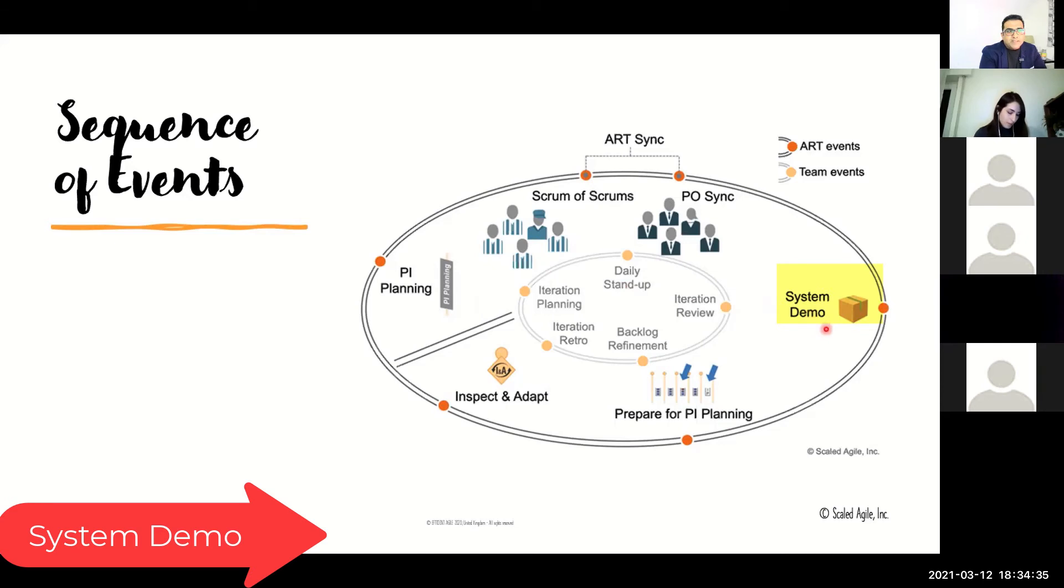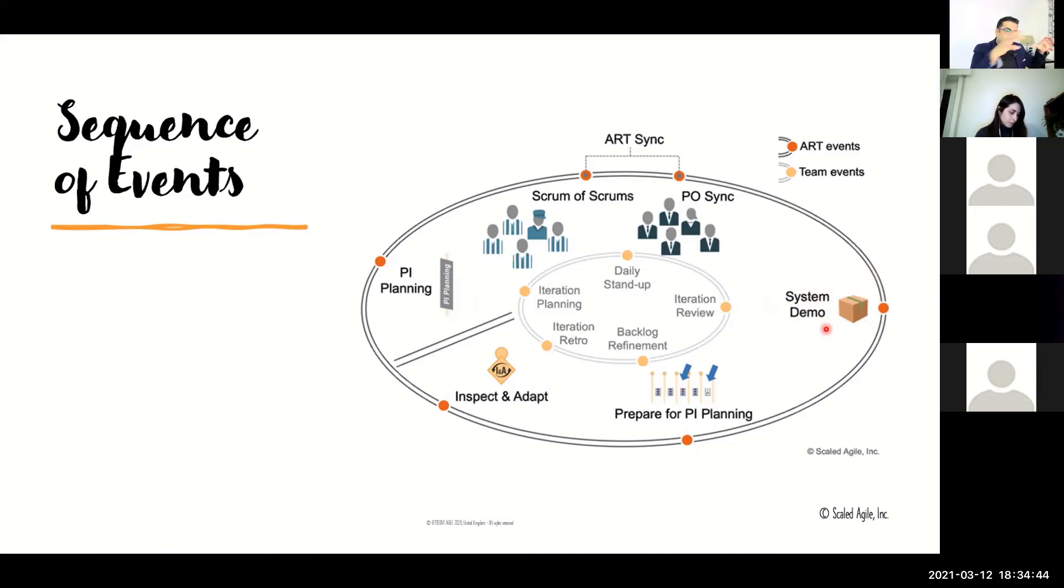There's also something called a system demo. The system demo is not your team demo, it's the integrated elements of everything. Team one, team two, team three, everybody integrates, and you have what the train has delivered in one sprint. That demo takes place after each and every iteration. That's where you get feedback from the product owners, product managers, stakeholders, and everybody gives you feedback.